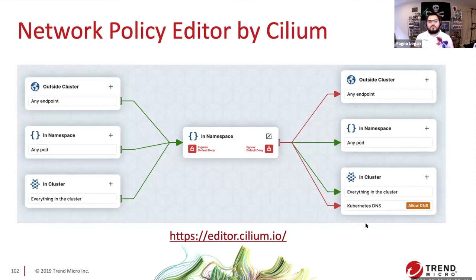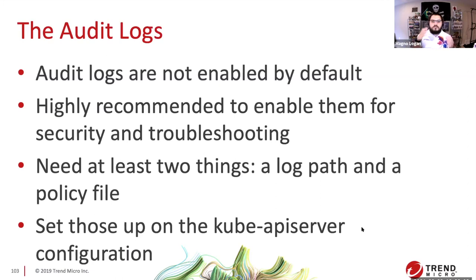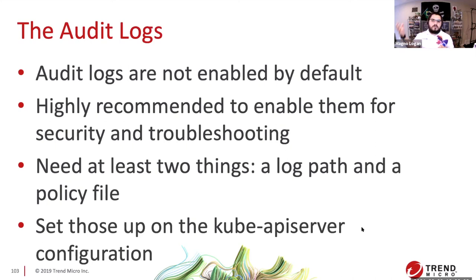Audit logs are not enabled by default, and it's highly recommended that you enable them for security and troubleshooting. Kubernetes logs can be verbose, but you want those audit logs especially for security. In the simplest setup, you just need a log path and a policy file configured on the Kube API server. I highly recommend sending those logs to a centralized location and monitoring with your SIEM — whether ELK stack, Splunk, or whatever. Check those logs because they contain information that can tell you if somebody is messing with your cluster.